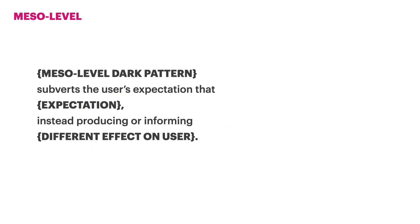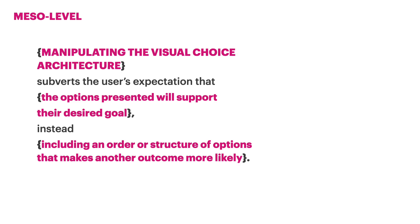At the mesolevel, we included components that addressed the user's expectation and the relationship of that expectation to a different final effect. Some patterns pointed more towards static moments in the user journey, while others described temporal effects that might be realized over a longer portion of the user's journey. For example, manipulating the visual choice architecture subverts the user's expectation that the options presented will support their desired goal, instead including an order or structure of options that makes another outcome more likely.